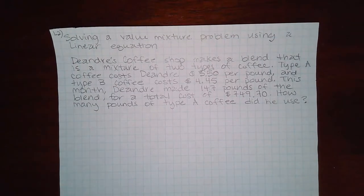And here we have solving a value mixture problem using a linear equation. So D'Andre's Coffee Shop makes a blend that is a mixture of two types of coffee.